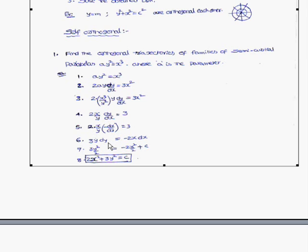Next, separate the variables using the variable separable method. Therefore, 3y dy = −2x dx. Integrating both sides: 3y²/2 = −2x²/2 + c. Simplifying, you get 2x² + 3y² = c. So 2x² + 3y² = c is the orthogonal trajectory of ay² = x³. These two curves are orthogonal to each other.